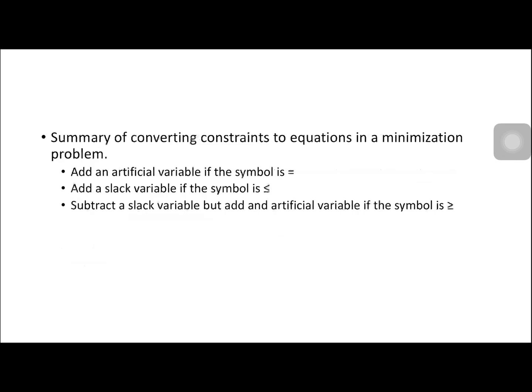For the summary of converting constraints to equations in a minimization problem: we add an artificial variable if the symbol is equal to; we add a slack variable if the symbol is less than or equal to; and we subtract a slack variable but add an artificial variable if the symbol is greater than or equal to.